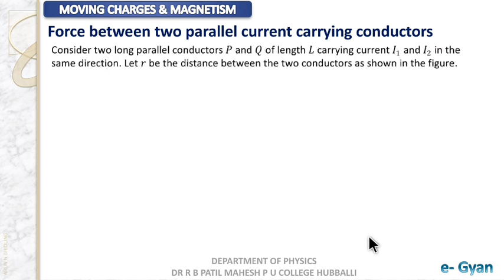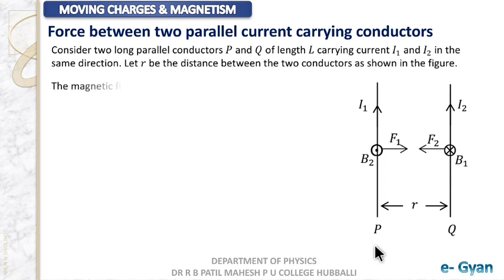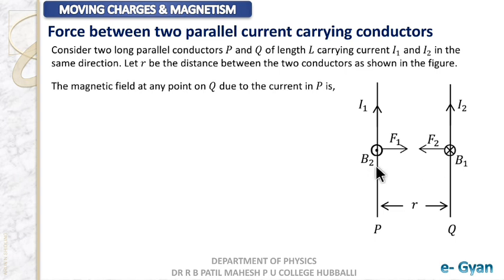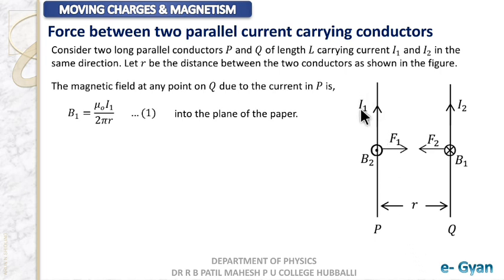Consider two parallel conductors P and Q having length L, with currents I1 and I2 flowing in the same direction, placed at a distance R from each other as shown. The magnetic field at conductor Q due to the current in P is B1 = μ₀I1 / 2πR, where I1 is the current in P and R is the separation. This magnetic field is into the plane of the paper.